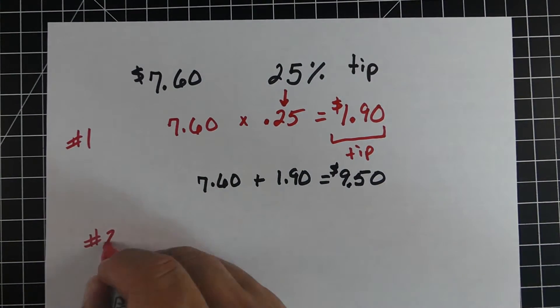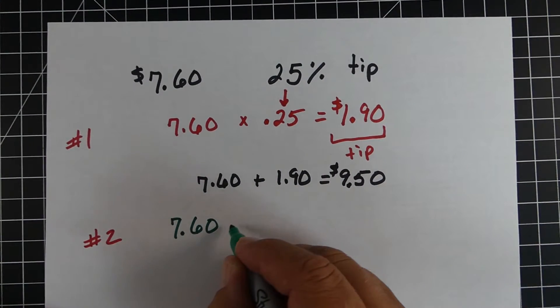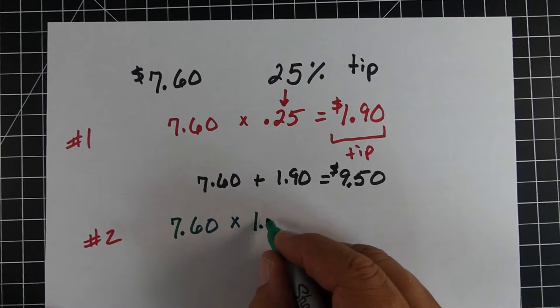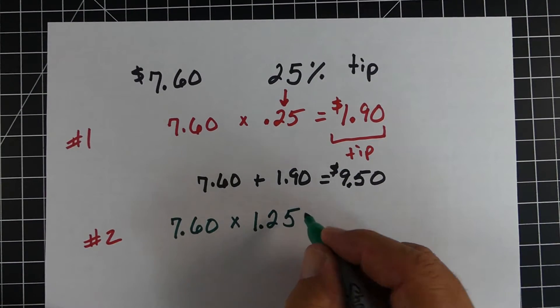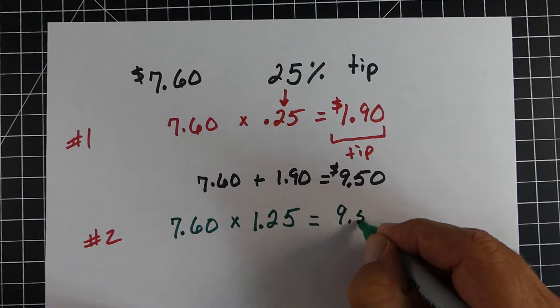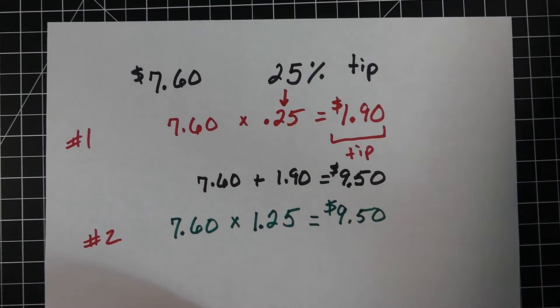Now, if we were to use method two, we would take the 7.60 from the meal, and we're going to end up multiplying that by 1.25. The one's the whole amount, the 0.25 is the percent of tip, and we end up with the exact same answer.